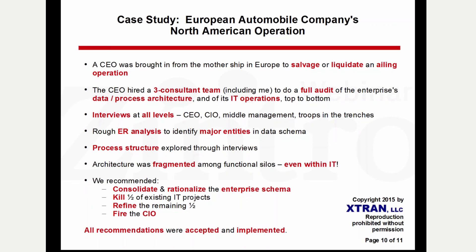We were given a big conference room and did interviews at every level of the organization — CEO, the CIO, a couple of other CXOs, middle management, and all the way down to key punch operators. We did a rough entity relationship analysis to find out what the major entities were in the data schema, to get a good idea of the lay of the land in terms of the data structure throughout the enterprise. We also used our interviews to explore the process structure. What we found was that the architecture of this particular operation was fragmented among silos — even within IT, we found fragmentation in silos.